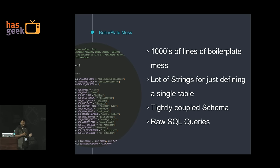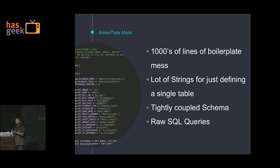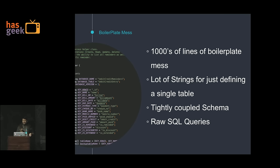There are tightly coupled schemas. How many of you have used the SQLite onUpgrade? When you update your schema, you have to take care of all your migrations, and that migrations API is not that good. And then there are raw SQL queries, which are very, very bad.